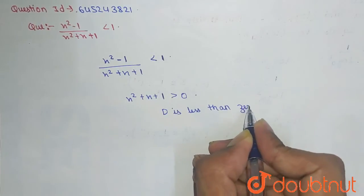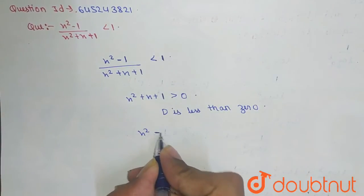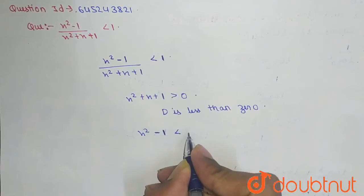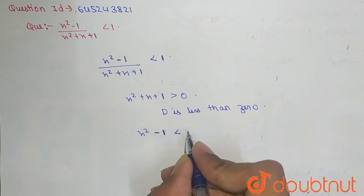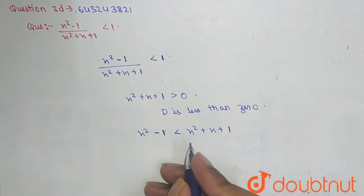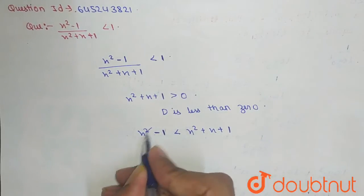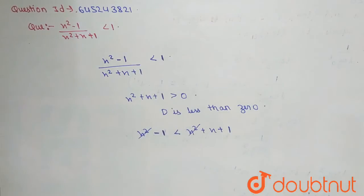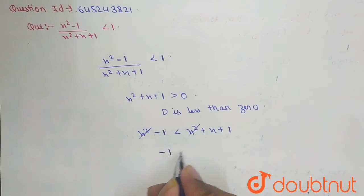So from here, what we will say that X square minus 1 is less than X square plus X plus 1. So from here, our X square and X square cancelled out. Our minus 1, X plus 1, when we solve this,